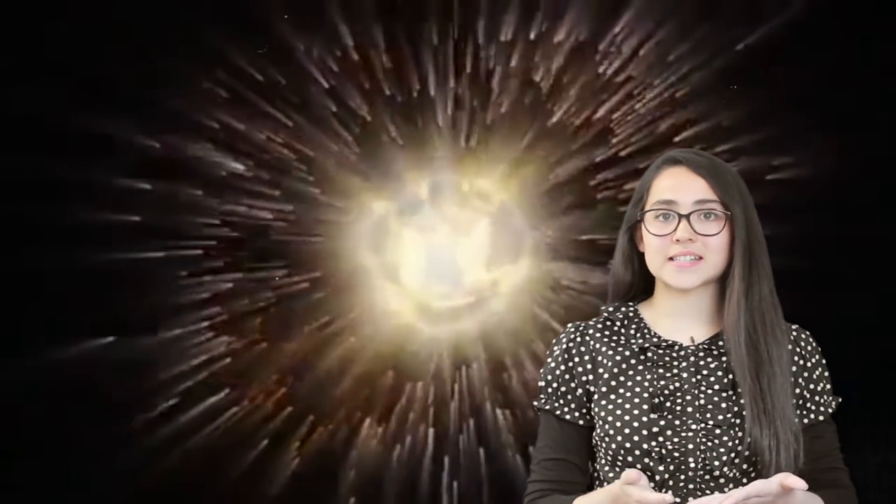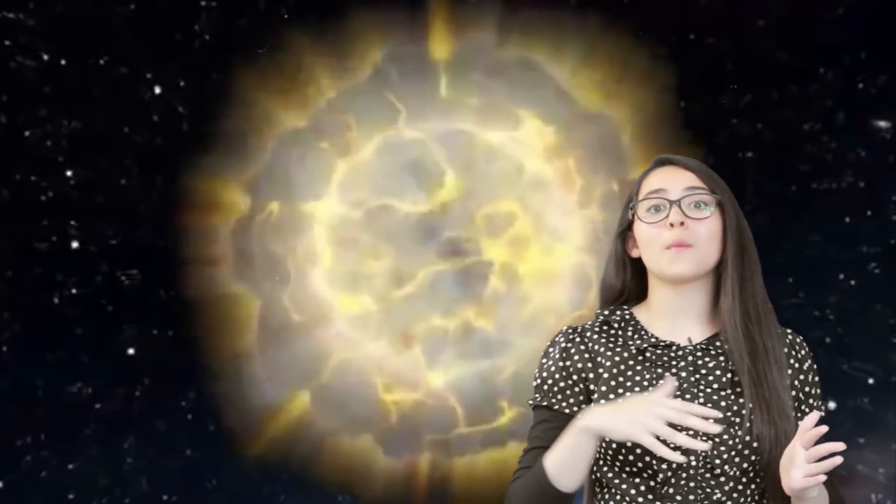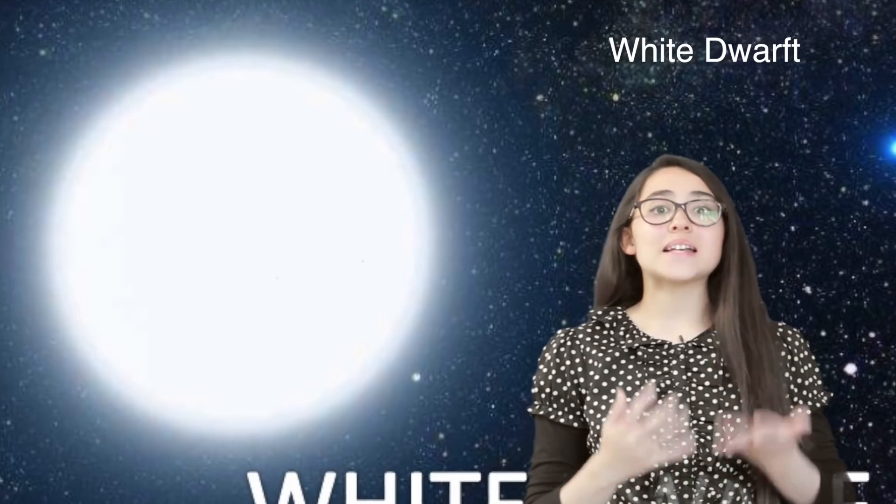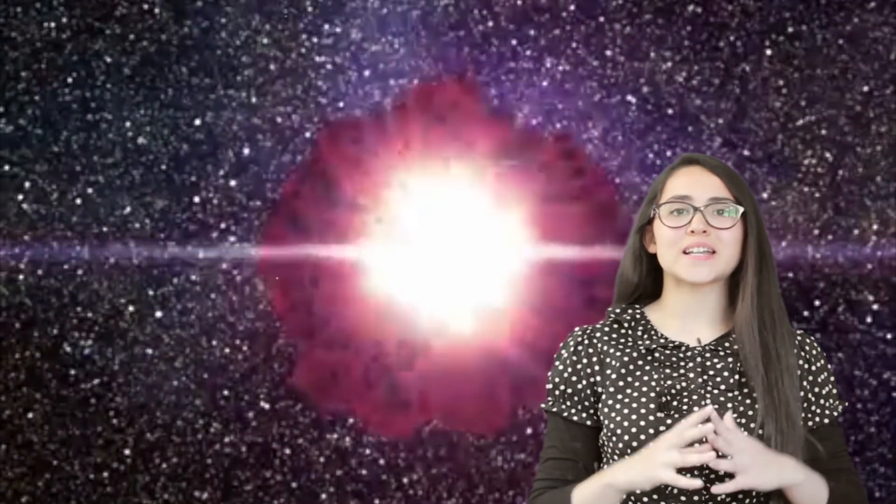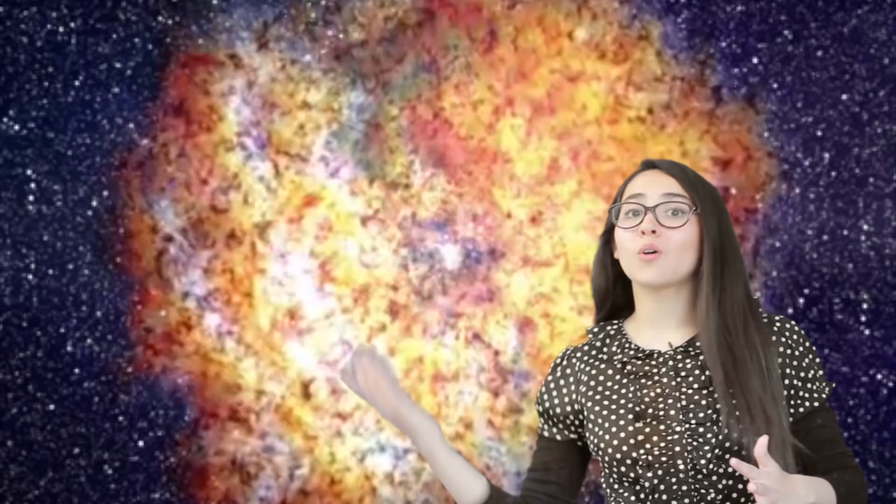What happens to the star next depends on how much mass it had. An average star will become a white dwarf. A massive star will become a red supergiant and will create a huge explosion called a supernova. After the supernova, it may become a black hole or a neutron star. Thus, the stars die.